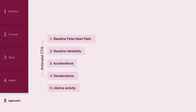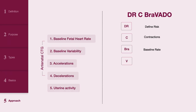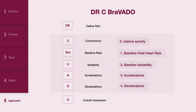In an antenatal CTG, only four of these features are assessed. A commonly used mnemonic for assessing CTGs is Dr. C. Bravardo, where D and R stand for defined risk, C is for contractions, Bra represents the baseline fetal heart rate, V for variability, A is for accelerations, D for decelerations, and O is for the overall impression. Remember, in an antenatal CTG, you will not comment on uterine activity or contractions.